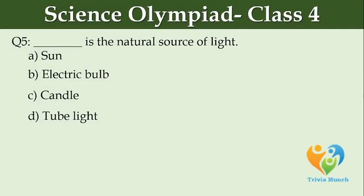Dash is the natural source of light. Option A: sun. Option B: electric bulb. Option C: candle. Option D: tube light.